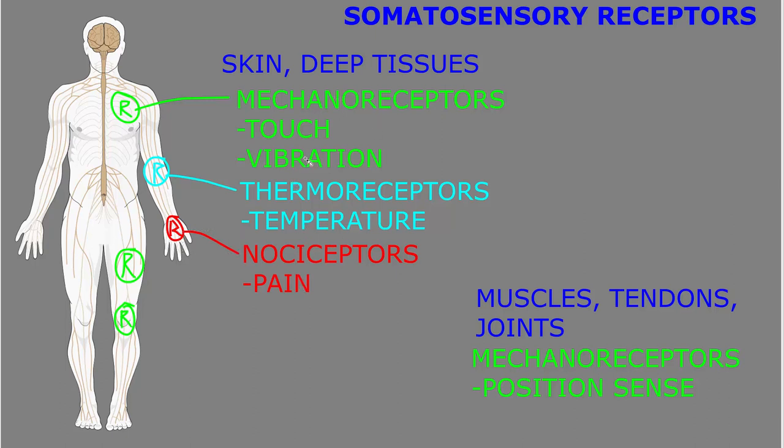So these somatosensory receptors are in the skin and deep tissues of the body, and another set of somatosensory receptors are in muscles, tendons, and joints to detect the position of body parts relative to each other. These are different types of mechanoreceptors in the muscles or in the tendons and the joints.